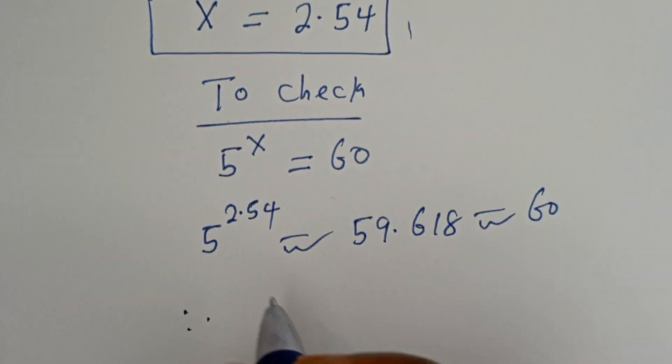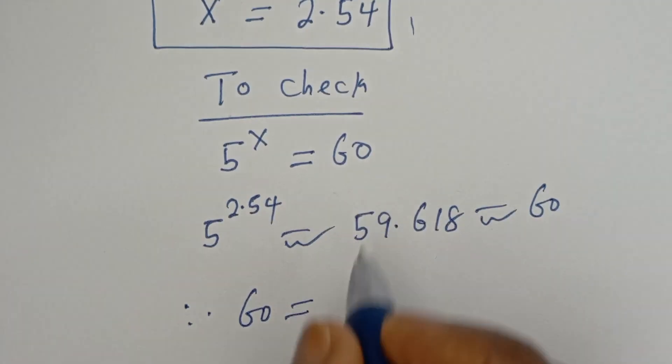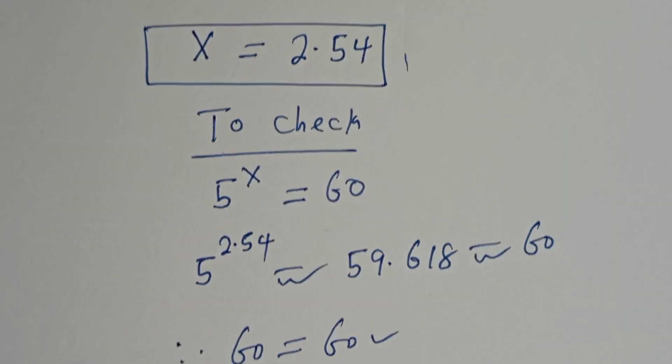Therefore, 60 is equal to the right-hand side, 60, which is true when x is equal to 2.54.